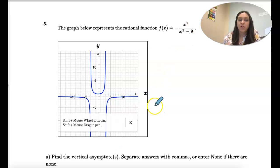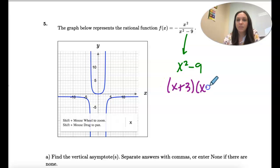The vertical comes from the denominator, and this is a difference of squares. If we factor this, we get x plus 3, x minus 3. If we set each one equal to 0 and solve, that's how we get the vertical.